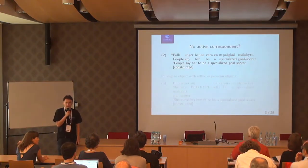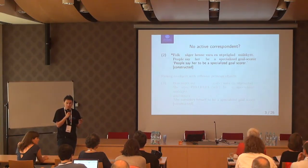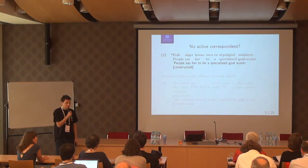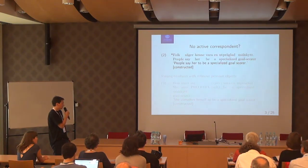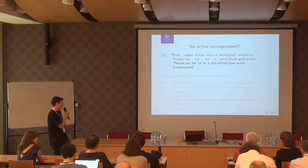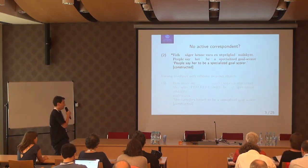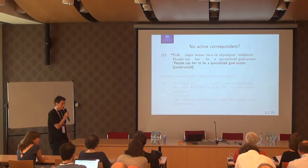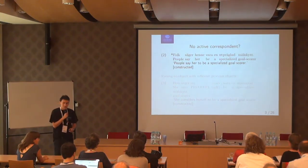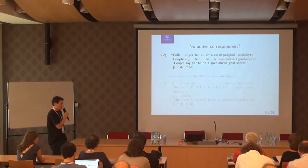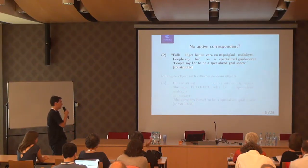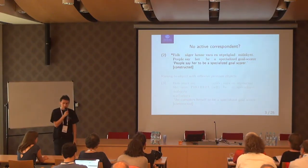The active correspondent to the passive construction is the raising-to-object construction. 'People say her to be a specialized goalscorer.' Here the object 'henne' corresponds to the subject of the passive construction shown on the previous slide. And one problem about this correspondence is that this active sentence is unacceptable in Swedish, just as it is in English: 'People say her to be a specialized goalscorer.' That's strange.